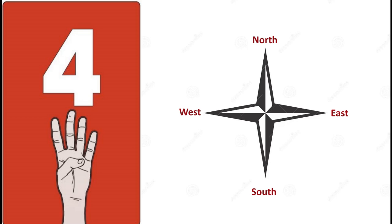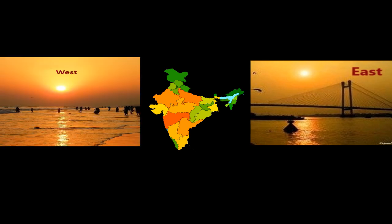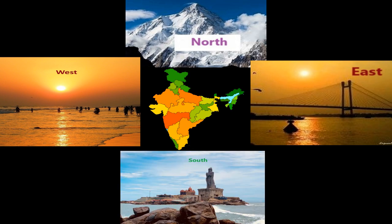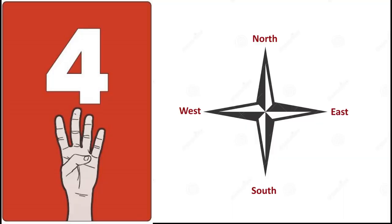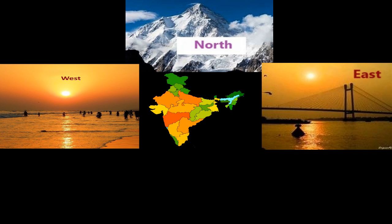4. The key directions are four. The four directions are East, West, North, and South. East, West, North, and South are called the four directions. Can you tell the four directions? East, West, North, and South.